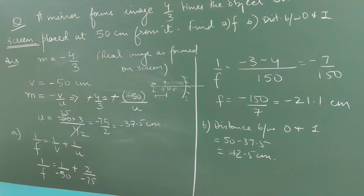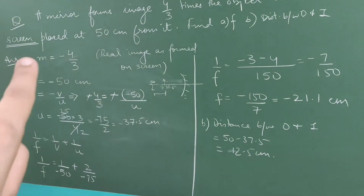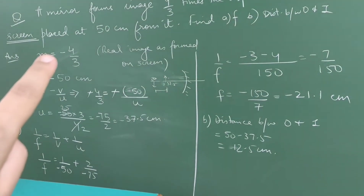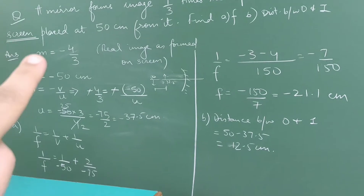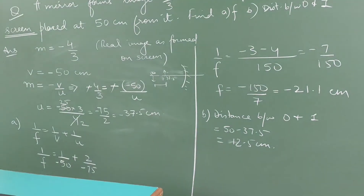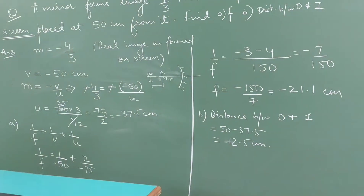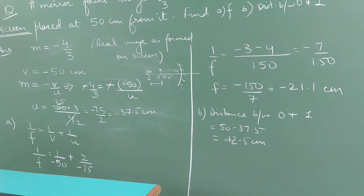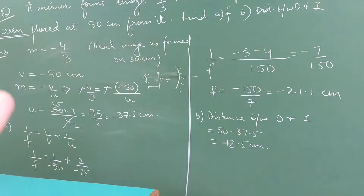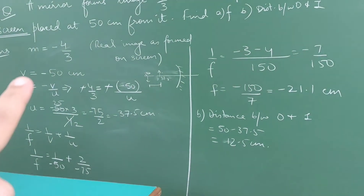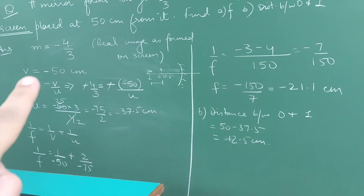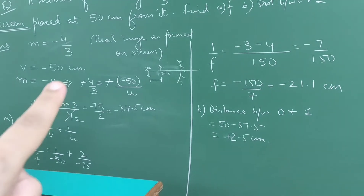From the data given: magnification is negative 4/3, because the image is formed on a screen, which is a clear indication that the image is real. So m is minus 4/3. The image is formed at 50 centimeters from the mirror, so v is minus 50.